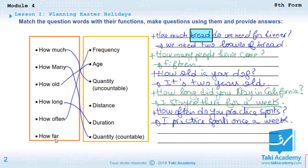Then we have how far. How far is, of course, used to ask about distance. For example, 'How far is your house?' You can say, 'My house is two miles away from here.'